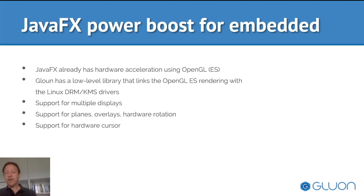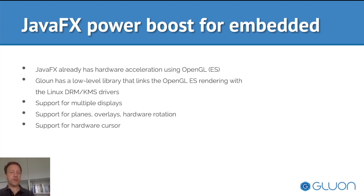First of all, JavaFX already has support for hardware acceleration. On Linux and Mac, for example, we use the OpenGL pipeline or OpenGL ES, which is also used on iOS and Android. Apart from that, Gluon created a low-level library that links the OpenGL ES rendering system with the low-level Linux drivers for DRM and KMS. That supports multiple displays, support for planes, overlays, hardware rotation, and cursor support if your hardware supports this.